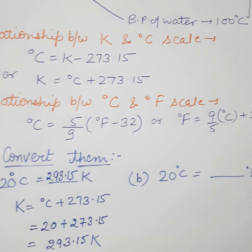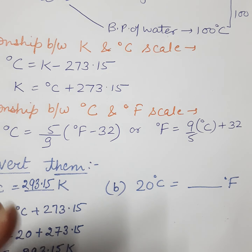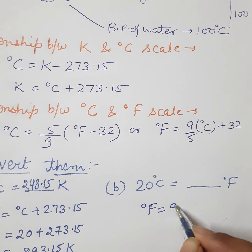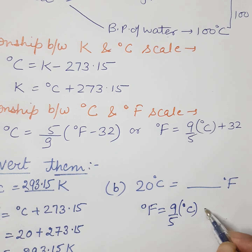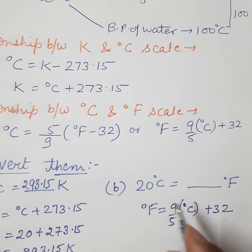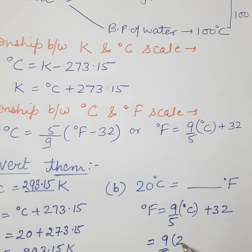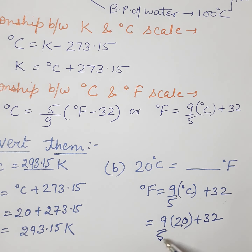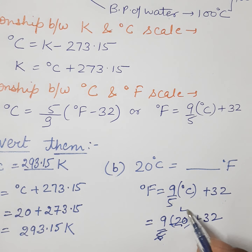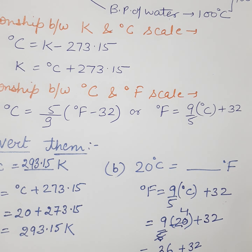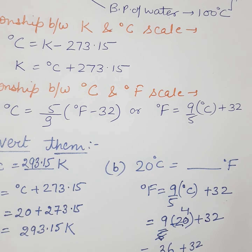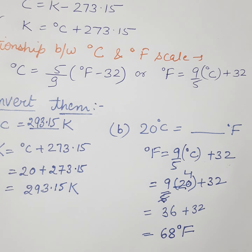Second: convert 20°C into degree Fahrenheit. The formula is °F = (9/5)(°C) + 32. Substituting 20 for °C: °F = (9/5)(20) + 32 = 36 + 32 = 68. So the answer is 68°F. In today's video we discussed supplementary units, prefixes, and some physical quantities.